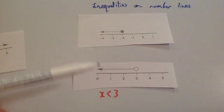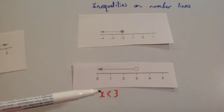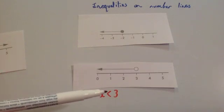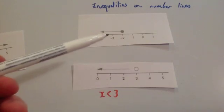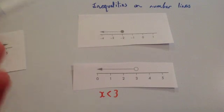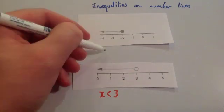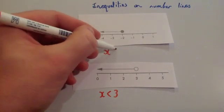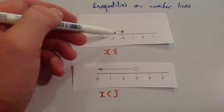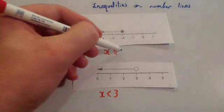This time we're looking at another inequality. The previous one had a hollow circle, so it was x is less than 3. This time it's going to have a shaded-in circle. So you would say x is less than or equal to minus 2.